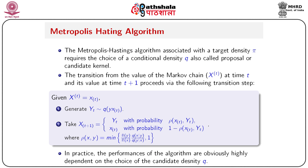The Metropolis-Hastings algorithm associated with a target density pi requires the choice of a conditional density q, also called the proposal or candidate kernel. The transition from xt at time t to its value at time t+1 proceeds as follows: given xt = x, generate yt from q(y | xt). Then x_{t+1} equals yt with probability rho(xt, yt), and equals xt with probability 1 minus rho(xt, yt), where rho(x, y) = min of a given expression.